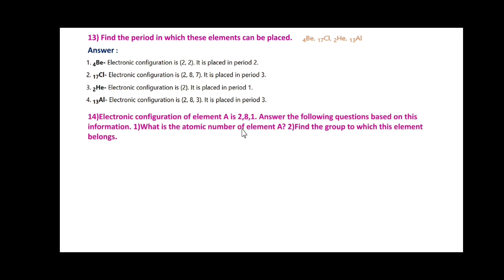Electronic configuration of element A is 2,8,1. Answer the following: What is the atomic number of element A? Find the group to which this element belongs. Atomic number of element A is 11 (2+8+1). Element A belongs to group 1.